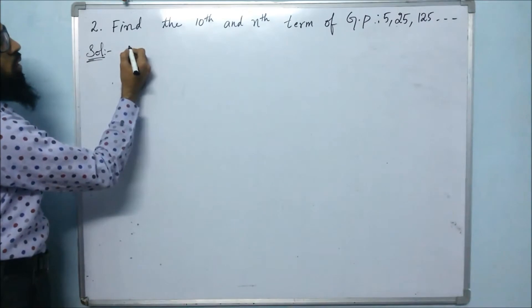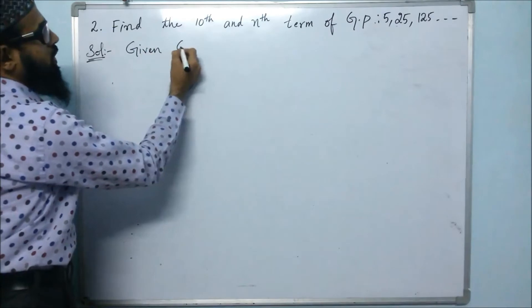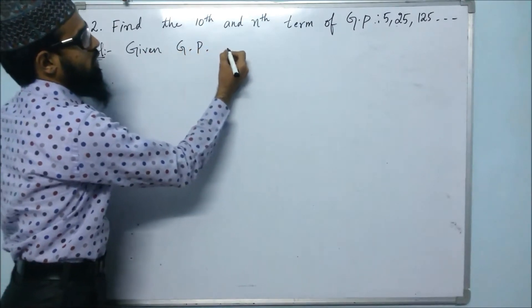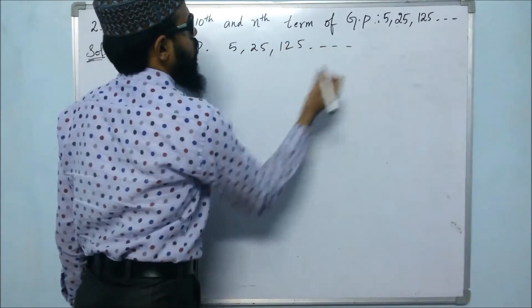First of all, we will write what is given. Given GP is 5, 25, 125, and so on.